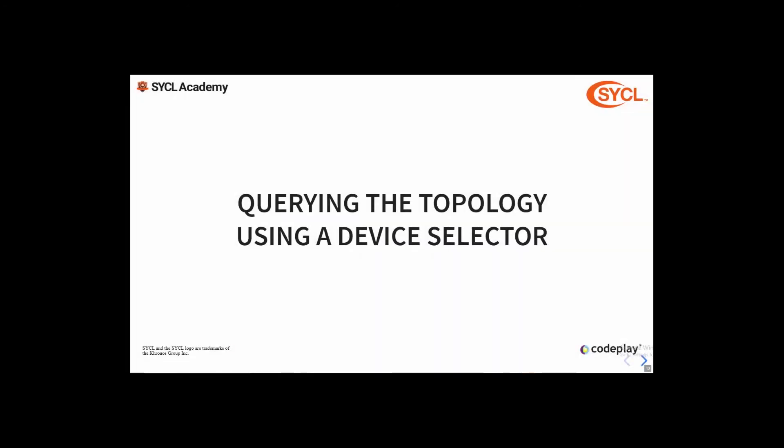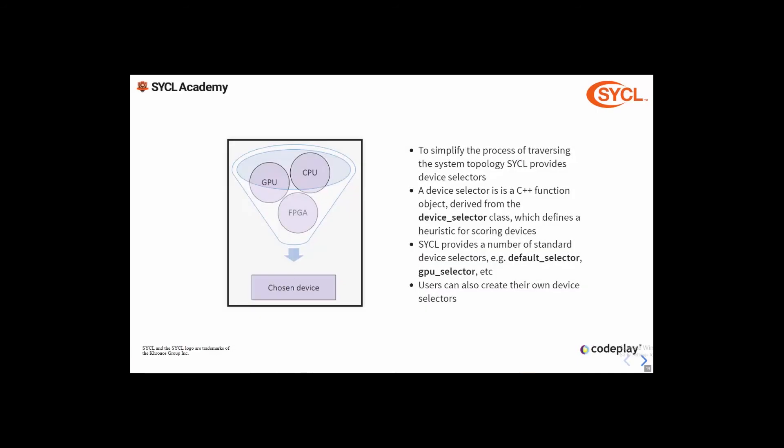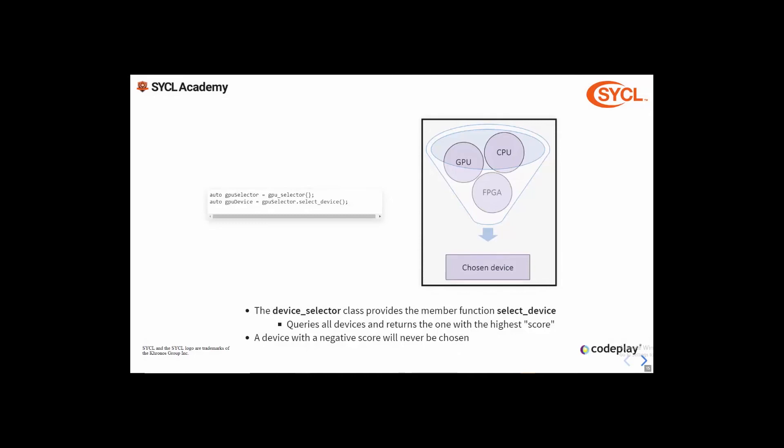Next we're going to look at how to traverse the topology using device selectors. To simplify the process of traversing and selecting a device, SYCL provides the device selector mechanism. A device selector is a function object which inherits from the device selector class and provides a heuristic for scoring devices. SYCL provides a number of standard device selectors but users can also create their own custom ones. The device selector class provides the select_device member function which traverses the topology, passes each device through the selector to obtain a score, and chooses the device with the highest score. Any device with a negative score will never be chosen.